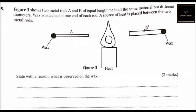This is rod A. This is rod B. There is wax attached at the end of each. And we have the candle or the source of heat, which may be a Bunsen burner or a candle.